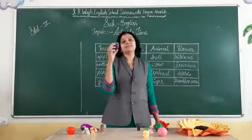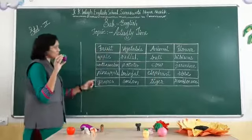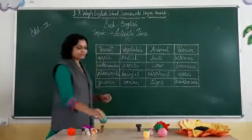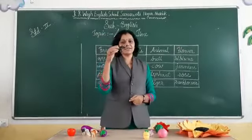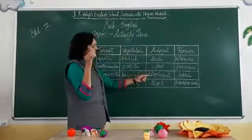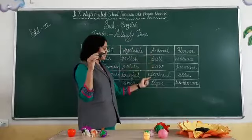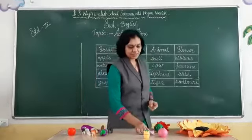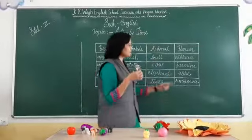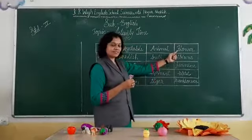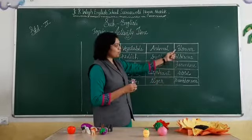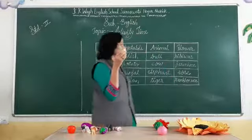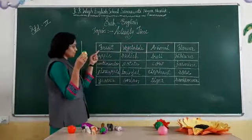Grapes — grapes is in the group of fruit. Elephant — elephant is in the group of animal. Jasmine — jasmine is in the group of flower. Pineapple — pineapple is in the group of fruit.